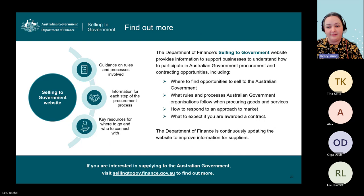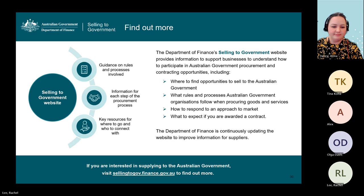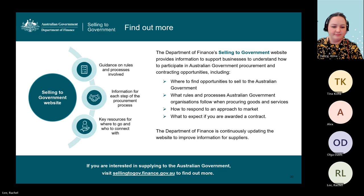If you want to know more, the Department of Finance's Selling to Government website provides information to support businesses to better understand how to participate in Australian Government procurement and contracting opportunities. This includes where to find opportunities, rules and processes organisations must follow, how to respond to an approach to market, and what to expect if you're awarded a contract. We are continuously updating the website to improve information for suppliers. Visit selling2gov.finance.gov.au to find out more. Thank you for taking the time to come and listen to us today — we hope you found the session useful.